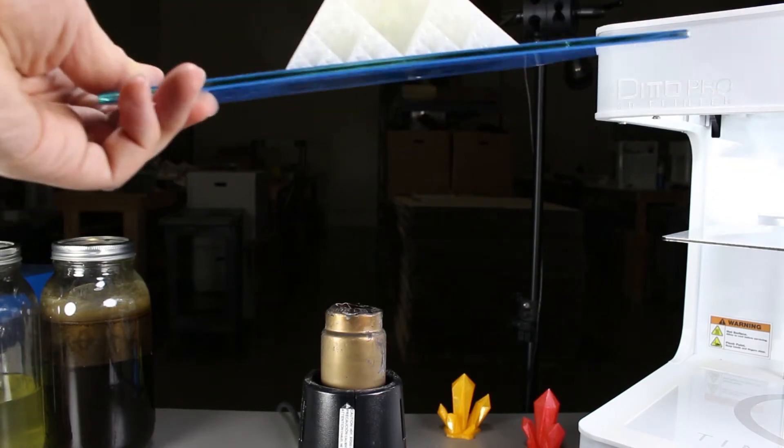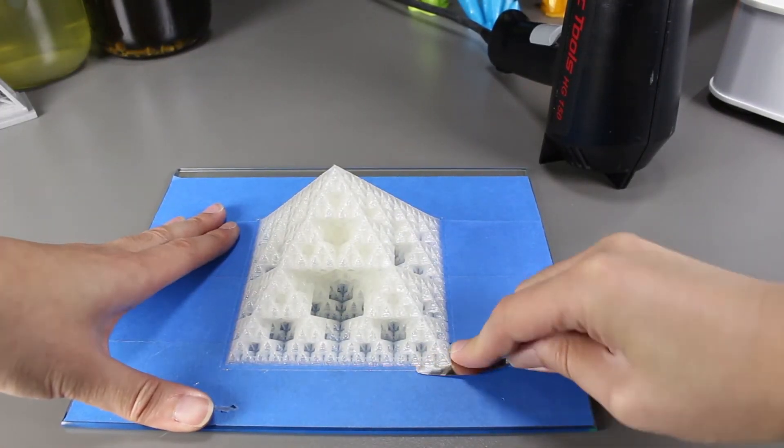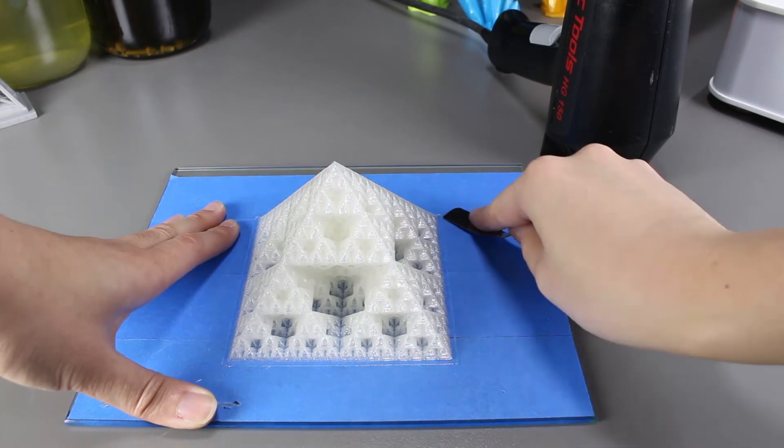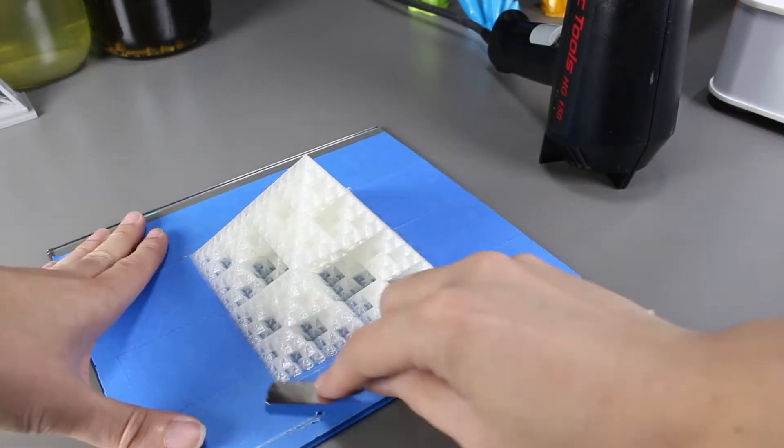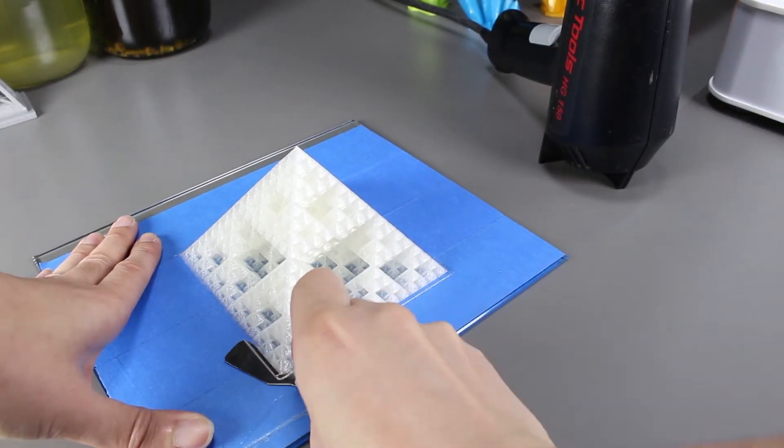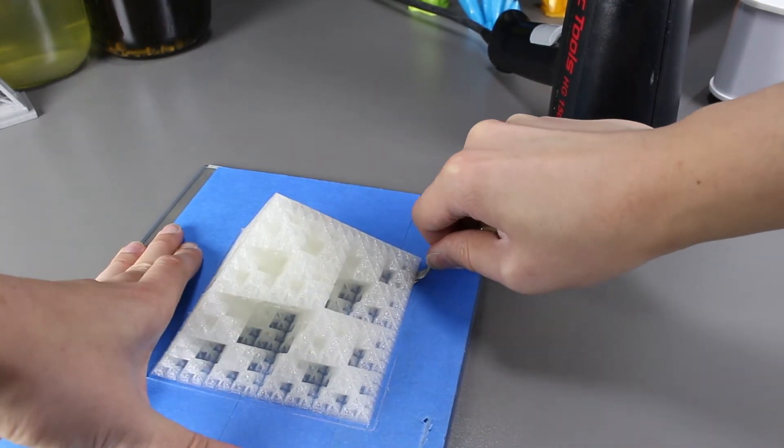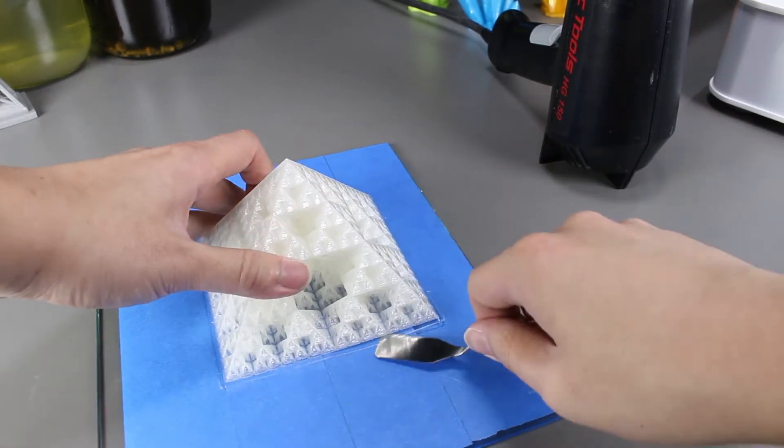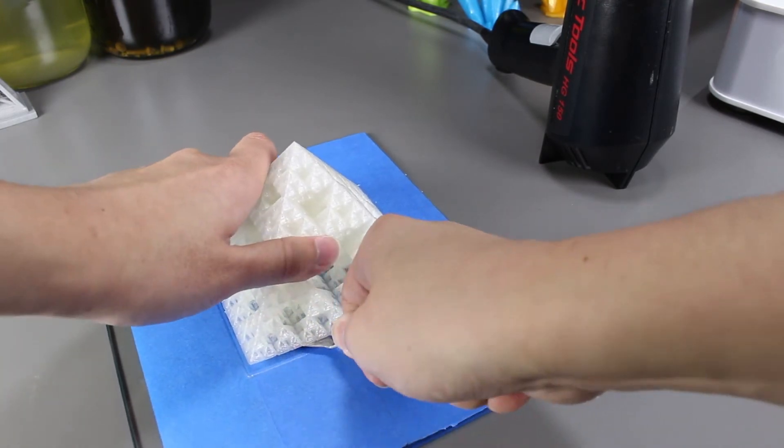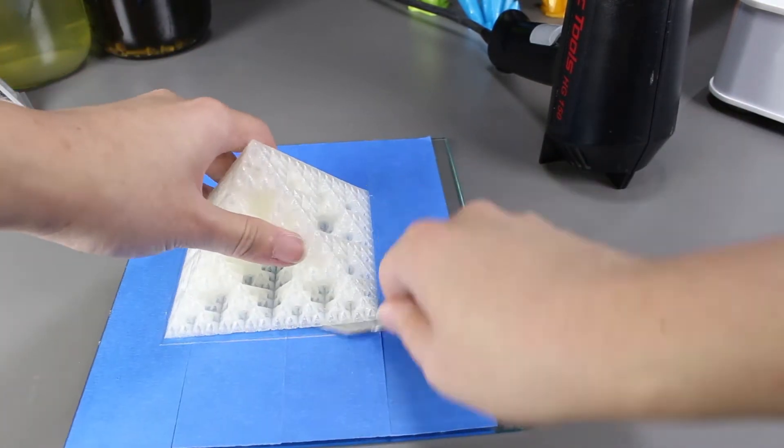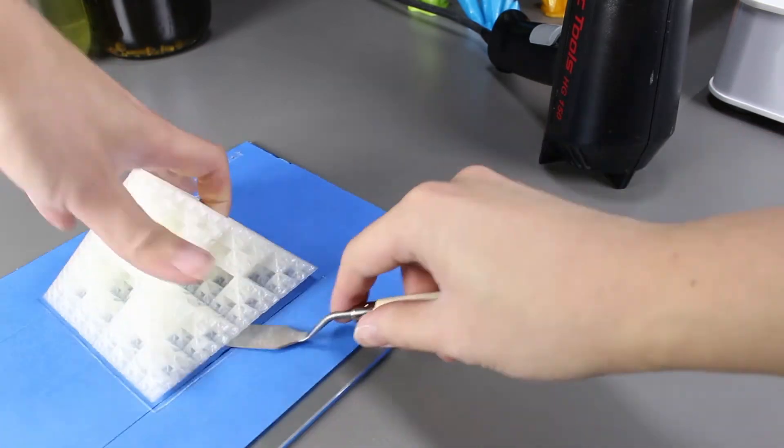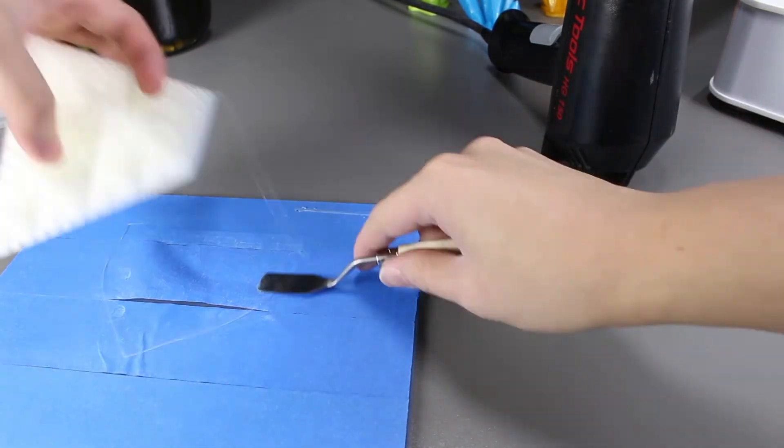Now's the time. I can reach the corners a lot easier, and it seems like I can get the print removal knife all the way in a lot quicker. Seems like I'm making quite some progress. Oh, it's starting to come off. And it's off.